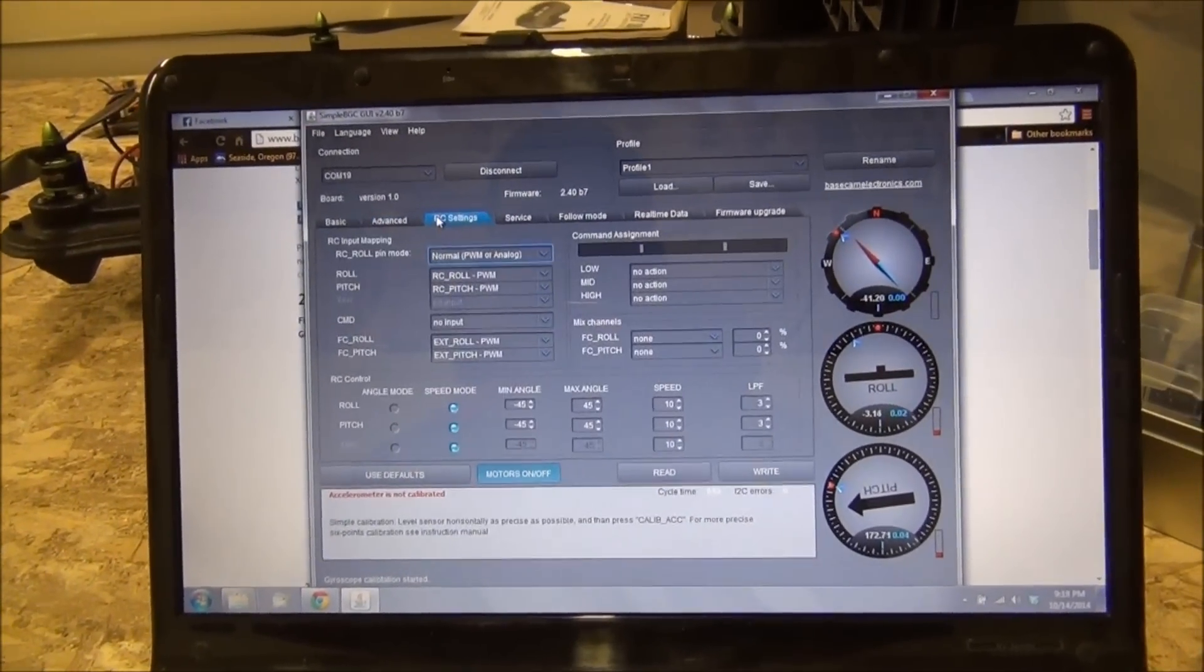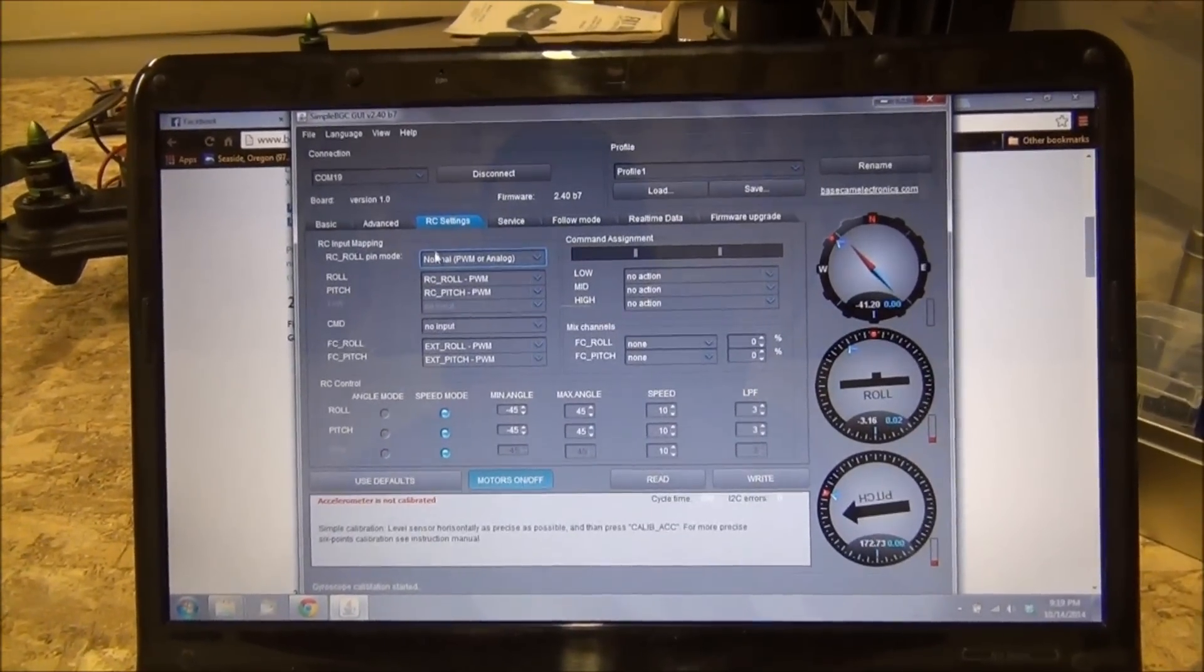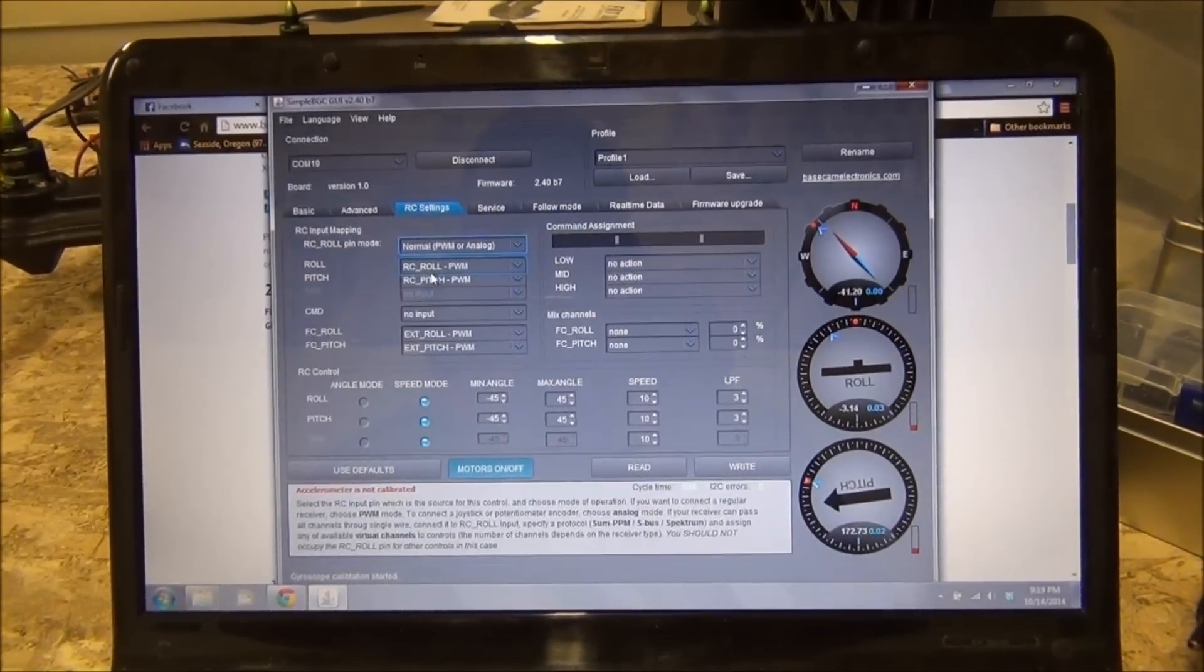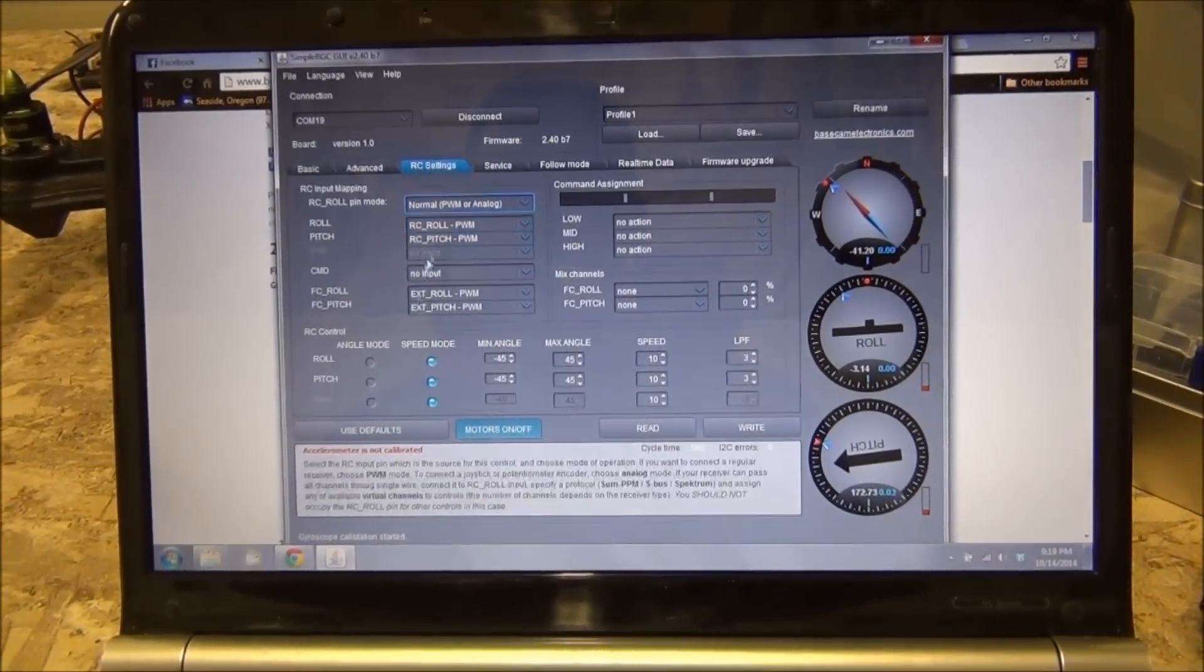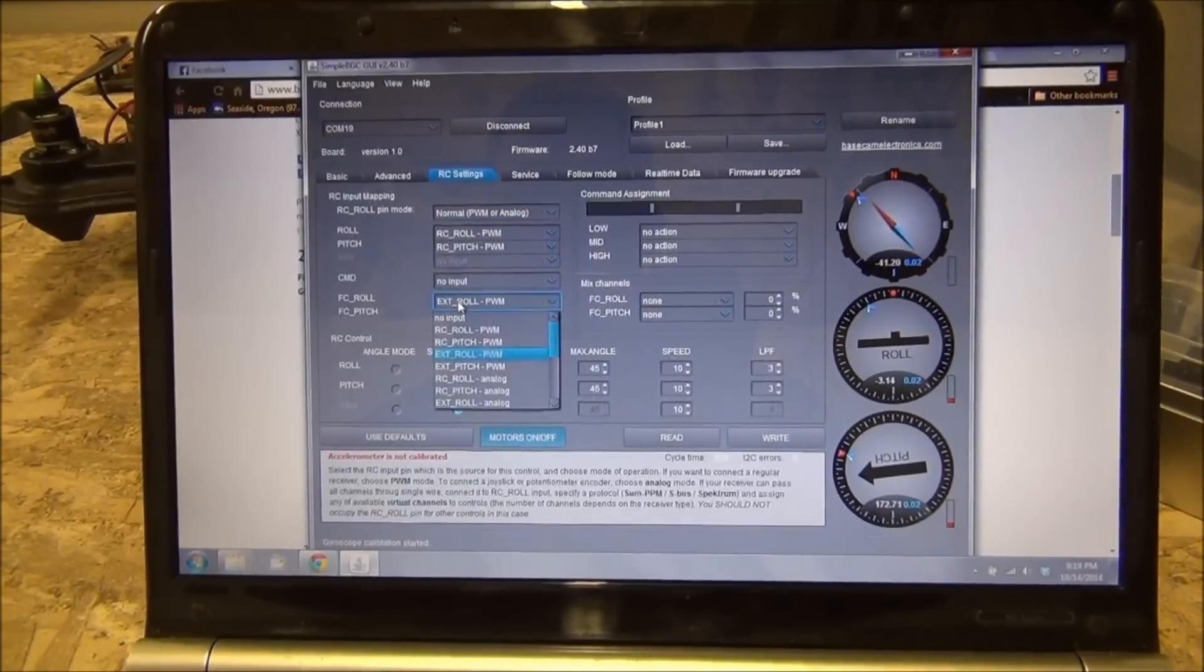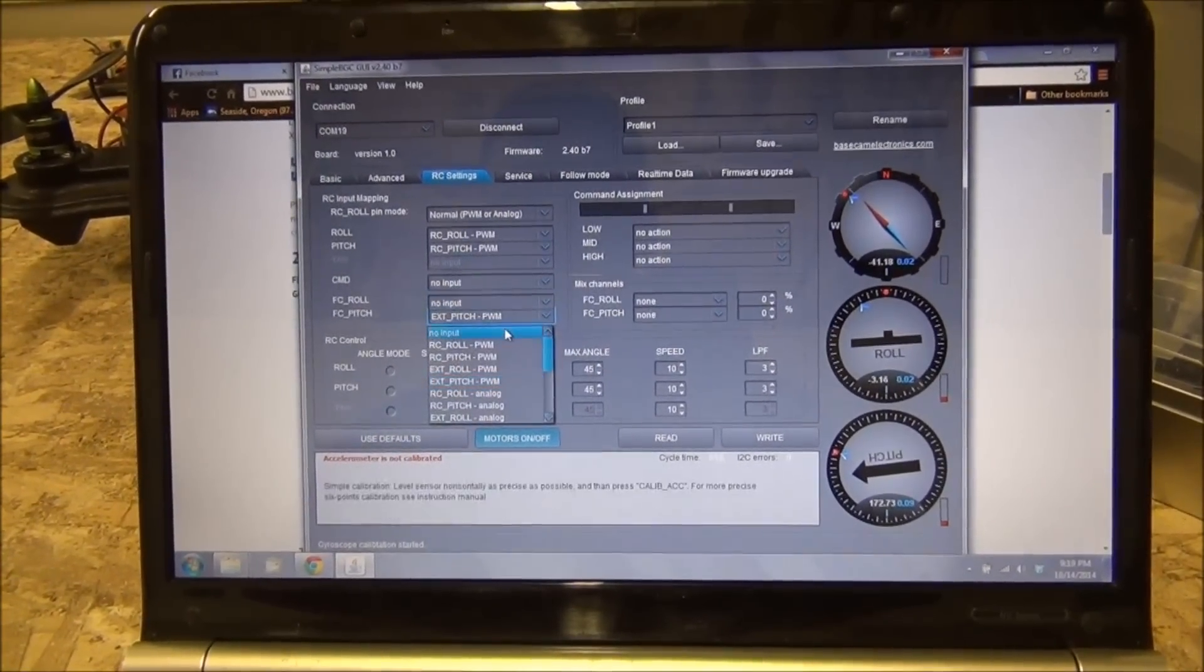The next in the RC settings, this one actually is where you set up the controller to take an input from your transmitter or your flight controller. I'm not using my flight controller for gimbal control. So I'm going to select these to no input.